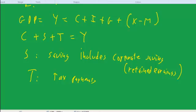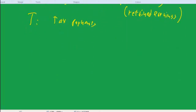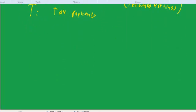Okay, so we put this all together in one big equation. And we can write C plus S plus T. That's all the ways you can use your income. Equals income equals spending. So equals GDP.